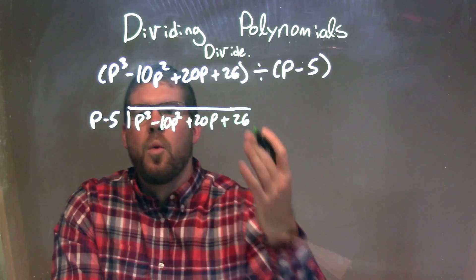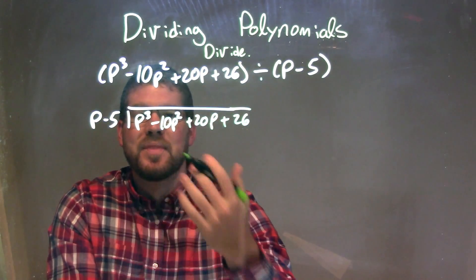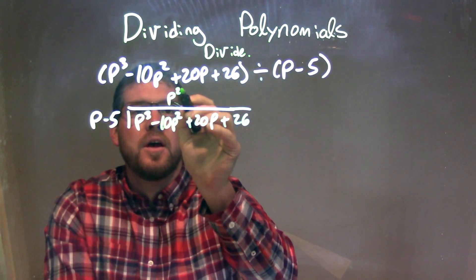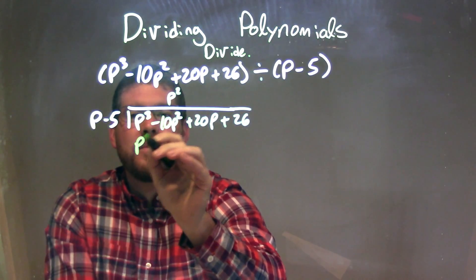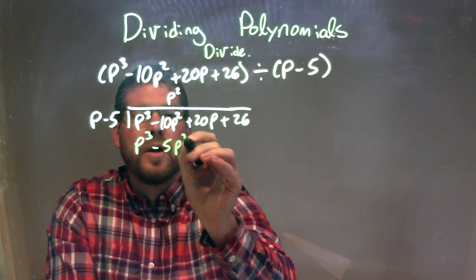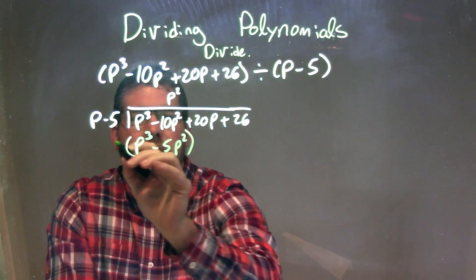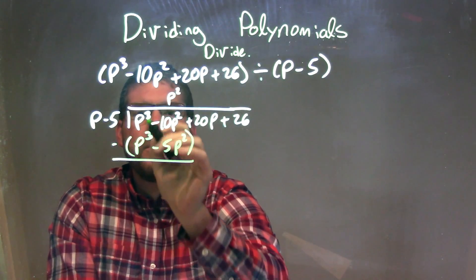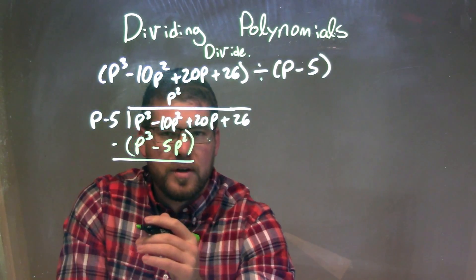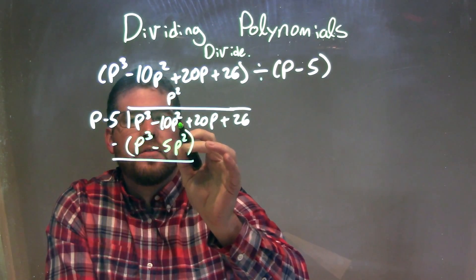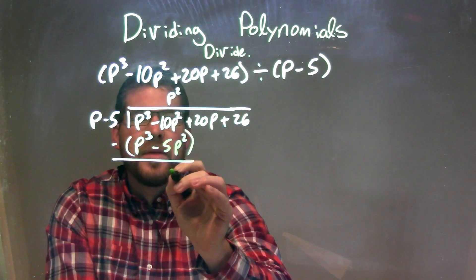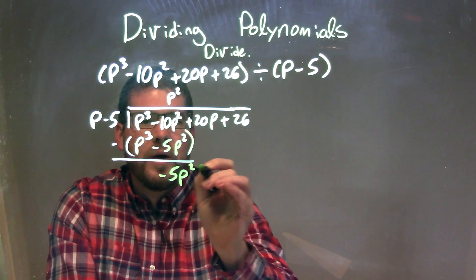So now I'm going to ask the question: what times p gives me p to the third? And that is just p squared. So p squared right there — p squared times p is p to the third, and p squared times minus 5 is minus 5p squared. I'm going to subtract the two, top and bottom. P to the third minus p to the third is zero — those cancel out. Minus 10p squared minus negative 5p squared gives us minus 5p squared.